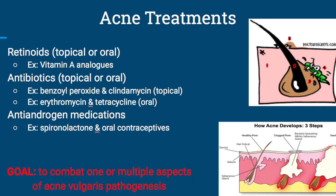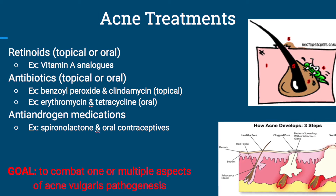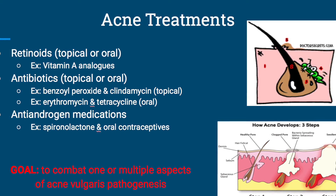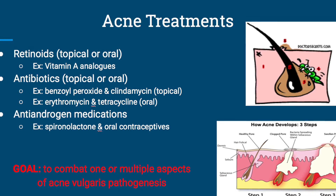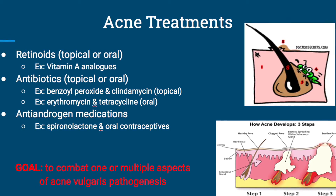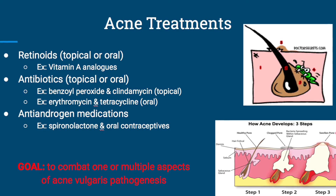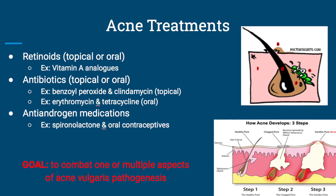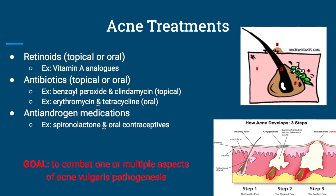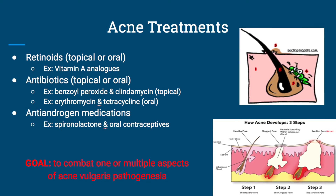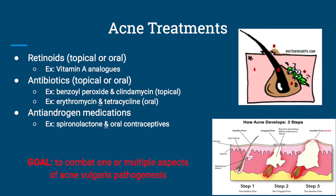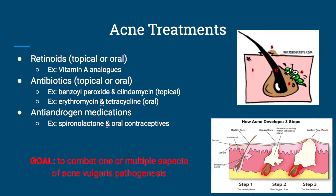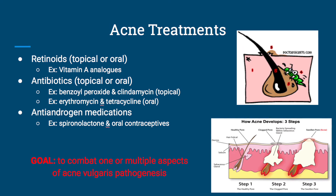The various acne treatments would include retinoids — an example would be vitamin A analogs — antibiotics like benzoyl peroxide, clindamycin, erythromycin, and tetracycline, and anti-androgen medications such as spironolactone and oral contraceptives. The goal is to combat one or multiple of the four areas we just went over for acne vulgaris.